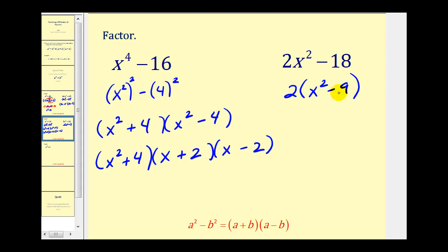And this binomial is a difference of squares. x² is a perfect square, 9 is a perfect square, and we have a difference. So we can factor this again. We bring down our factor of 2 and then we'd have an x plus 3 and an x minus 3. Again, remember 3² is equal to 9 and the factors of x came from the factors of x².